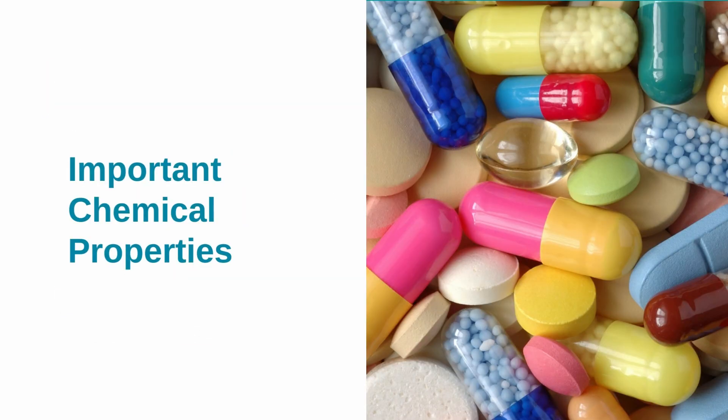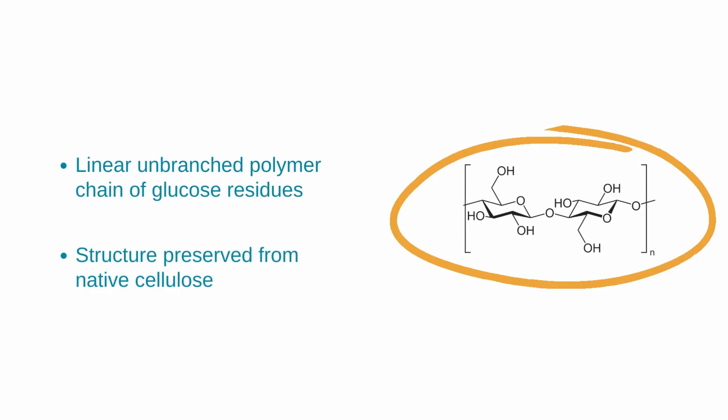What are the main chemical properties of MCC that are relevant to its functionality as an excipient? The chemical structure of MCC, which is shown here, corresponds to the chemical structure of native cellulose. The polymer molecule exists as a linear unbranched chain of beta-D glucose monomers that are 1-4 linked. Fourier transform infrared spectroscopy reveals similarity between commercial MCC and native cellulose, which confirms that the chemical structure is preserved.